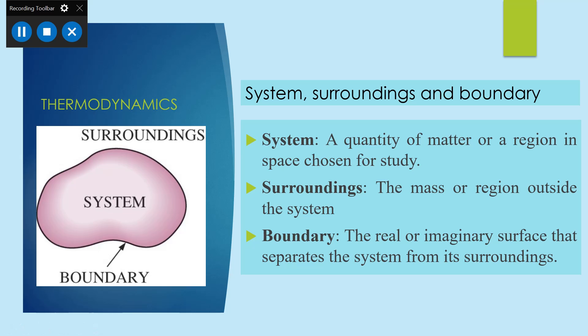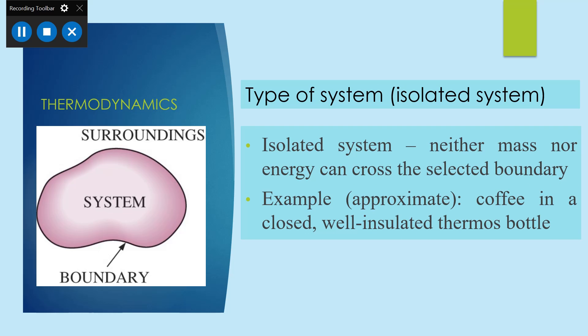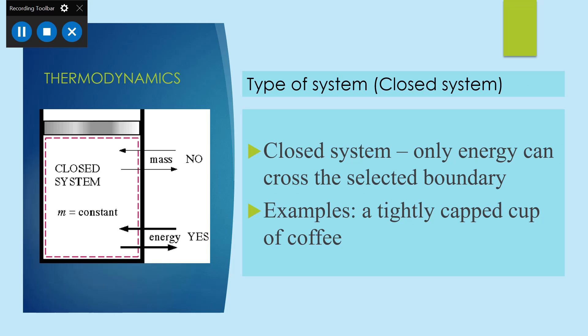There are three types of systems. The first is an isolated system. In an isolated system, neither mass nor energy can cross the selected boundary — no mass or energy will leave the system or cross the boundary. For example, consider coffee in a closed, well-insulated thermos bottle or thermoflask — neither the mass leaves the system nor the temperature changes. This type of system is known as an isolated system: completely isolated with no mass or energy transfer across the boundary.